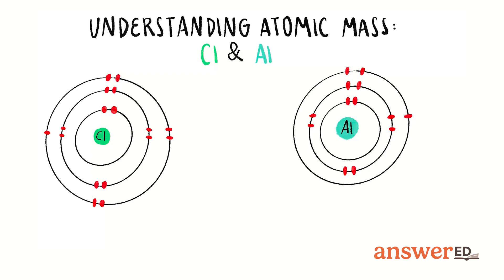First, we need to grasp some fundamentals. The atomic mass of an element in atomic mass units is approximately equal to the number of protons and neutrons in its nucleus.